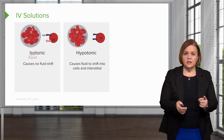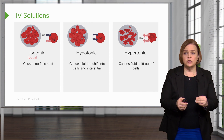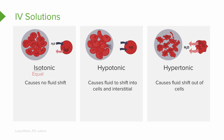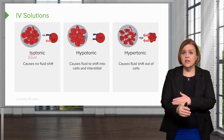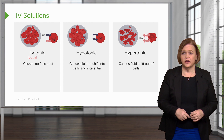Now we're talking about hypertonic solutions. Look at those cells and compare them. In the first example for isotonic, they look about the same. In hypotonic, they're starting to swell — you see those arrows going into the cell. For hypertonic, look at them — they look like dehydrated potato bugs, all shriveled up. If I hang a hypertonic solution, it's going to cause fluid to shift out of the cells, and that's why they look so dehydrated.